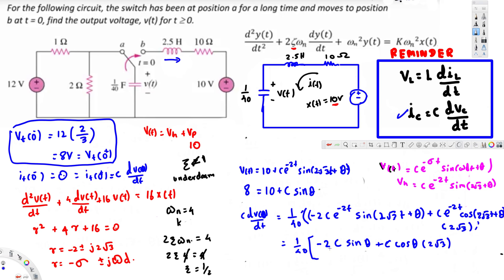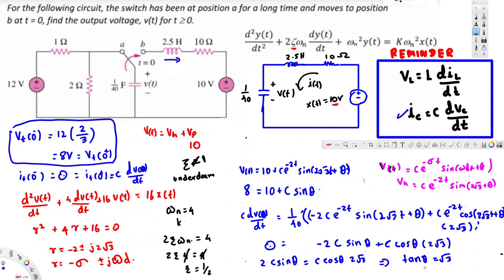Since the whole expression equals zero, we can eliminate the 1/40 factor. So -2C·sin(theta) + 2√3·C·cos(theta) = 0, which rearranges to 2C·sin(theta) = 2√3·C·cos(theta). Dividing both sides, we get tan(theta) = √3, therefore theta = tan⁻¹(√3) = 60 degrees.